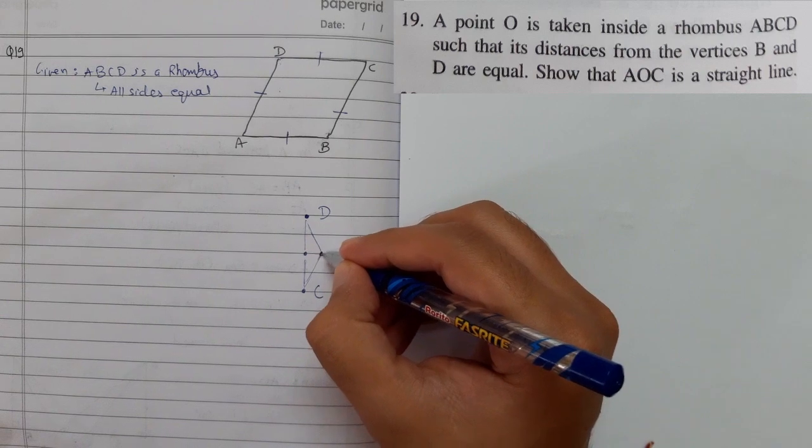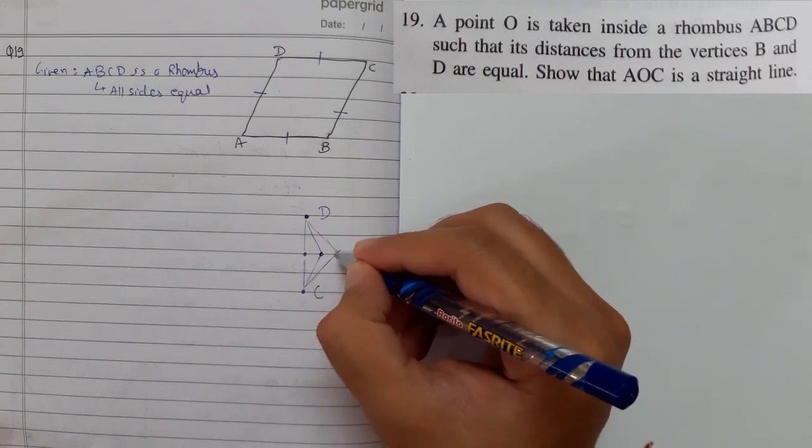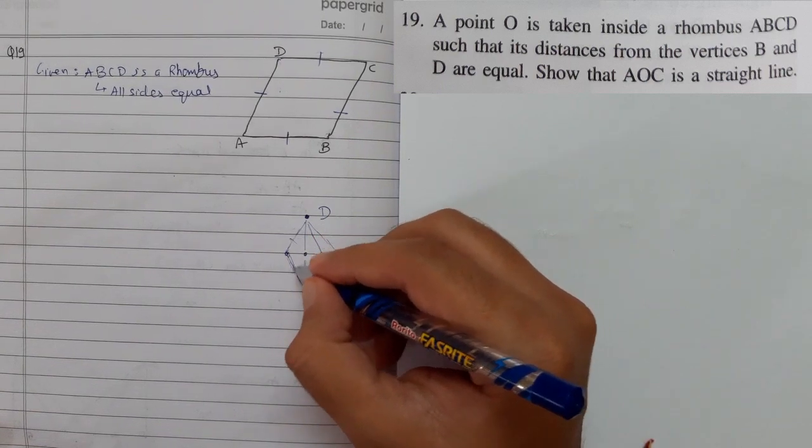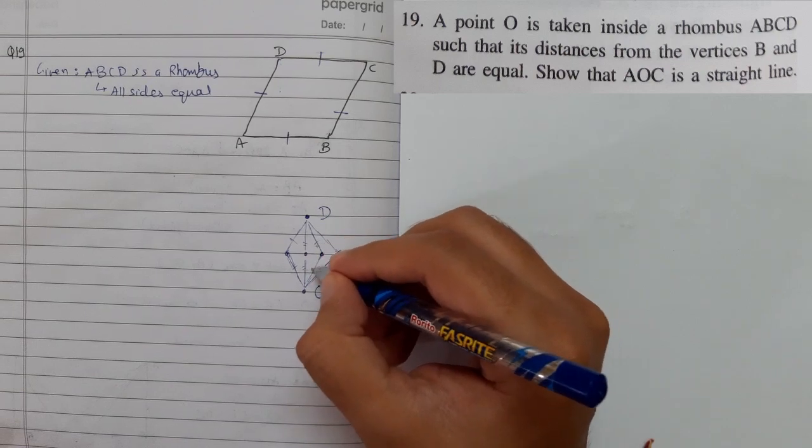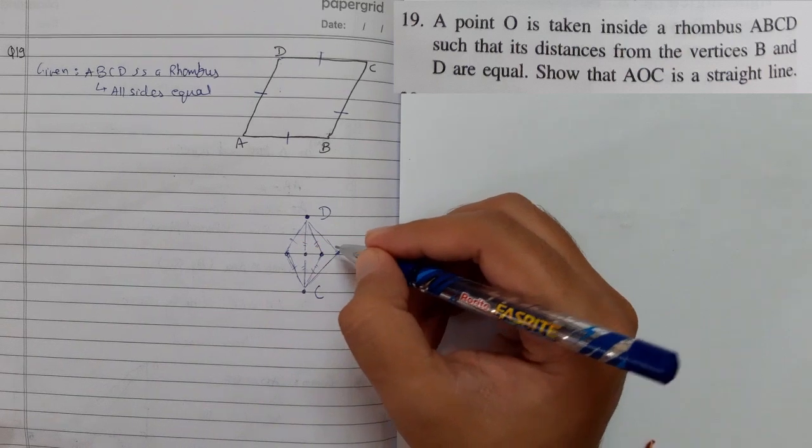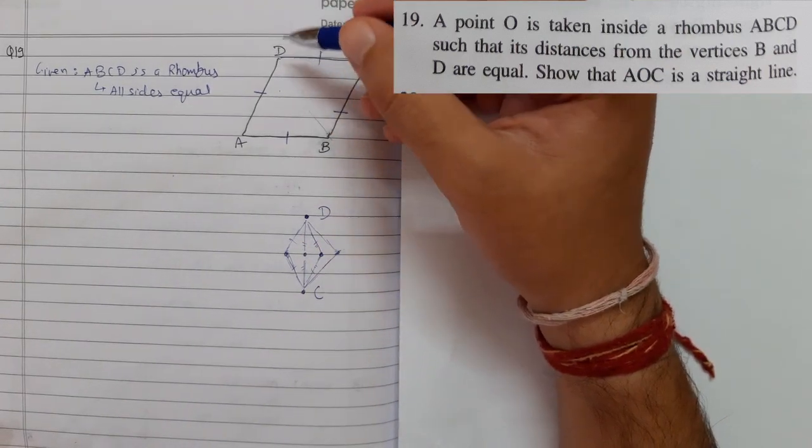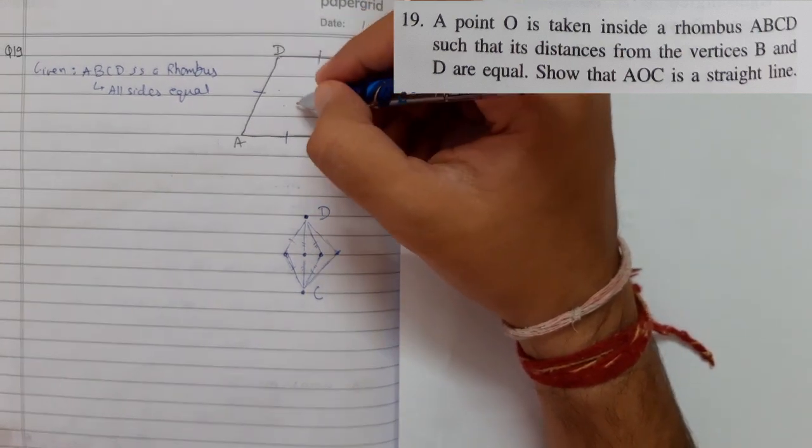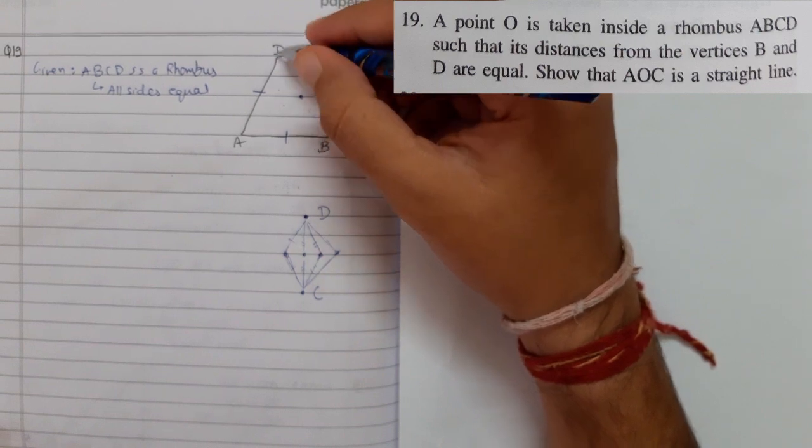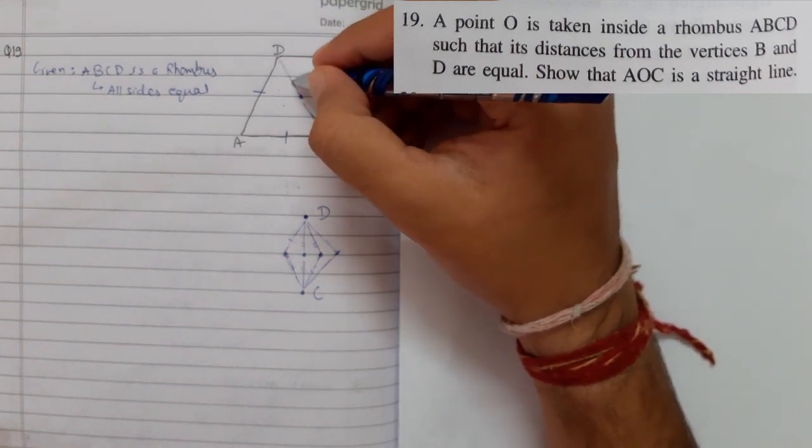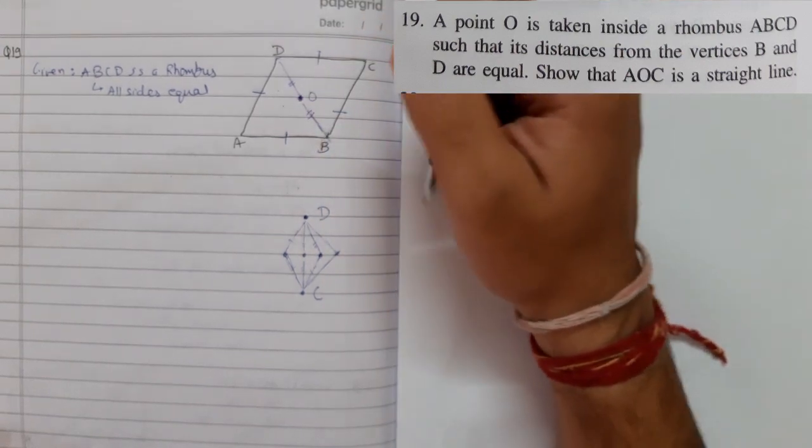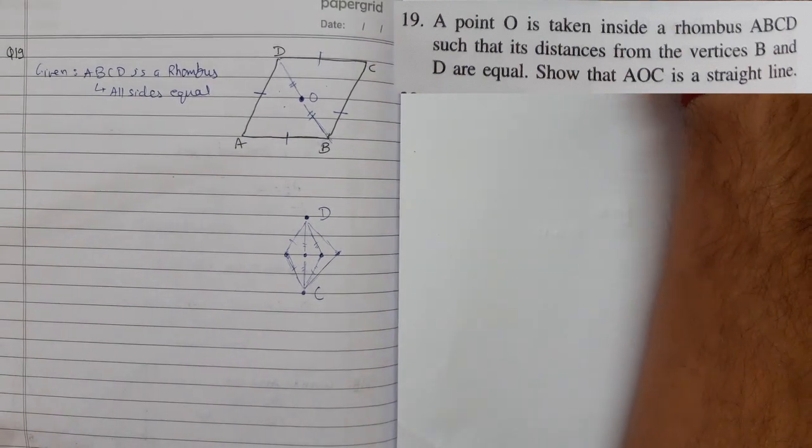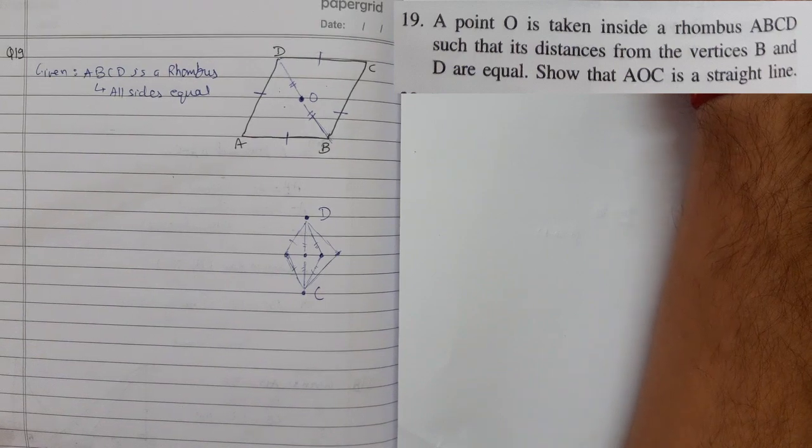So it can also be here. It is equal to this. So point can be anywhere. So from B and D the point should be equal. It can be here, here, anywhere. So the convenient place is to take exactly in the middle, point center. Convenient place I am saying. Because they are not saying wherever it is, it is my wish. I am drawing it at the center.